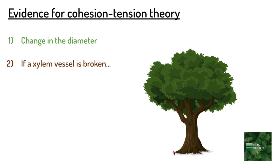The second piece of evidence is when a xylem vessel is broken in a tree. Two things happen, or rather don't happen. First, the tree can no longer draw up water.